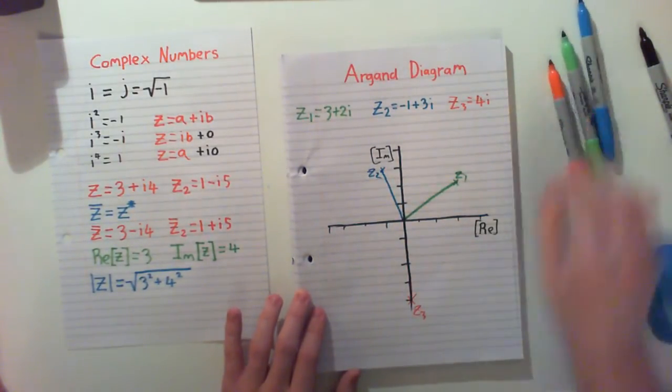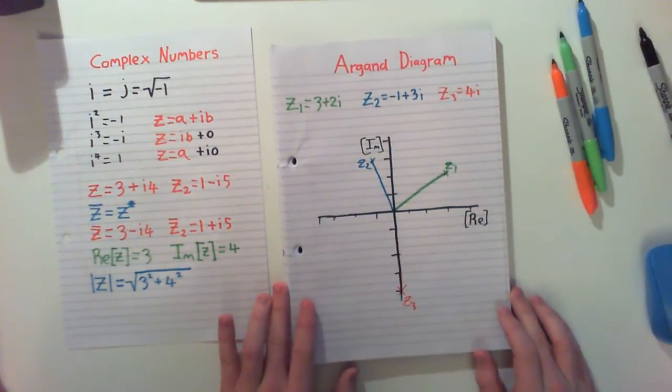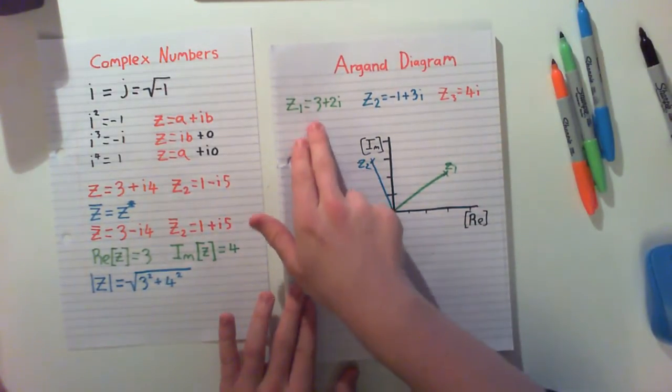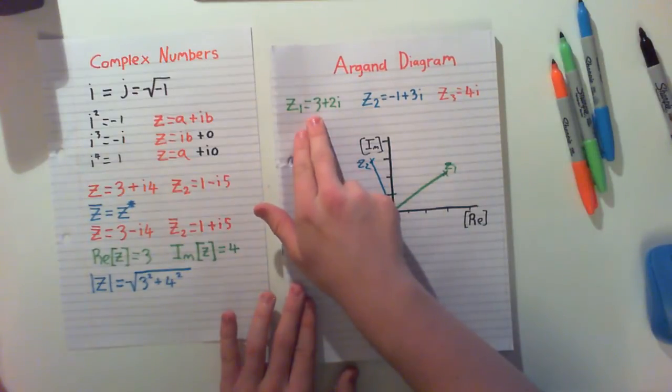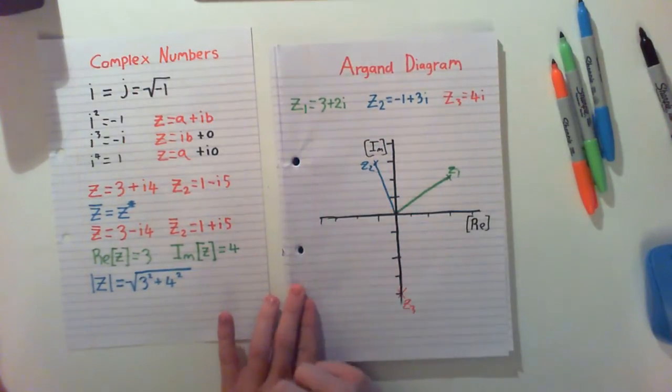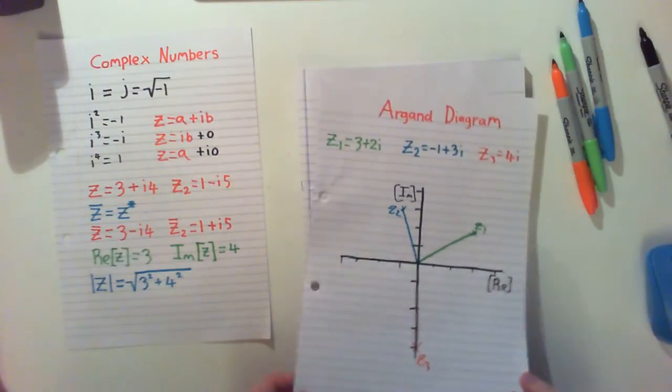Now there's another way we can represent these. Because at the moment, these are being given by basically an X part and a Y part. So we're going to address something now which we call polar coordinates.